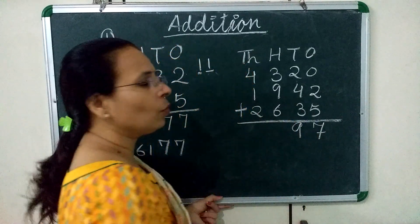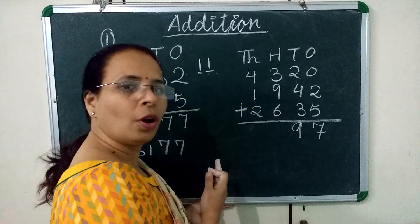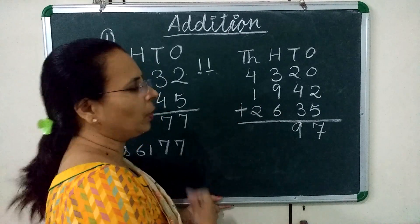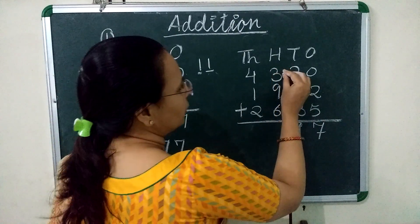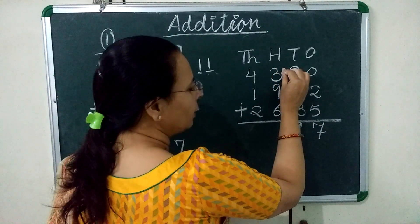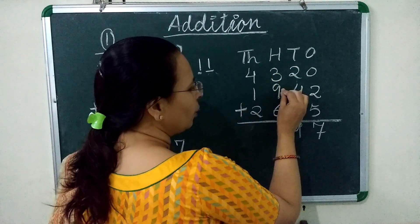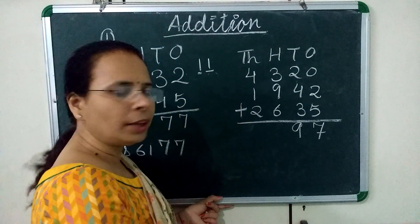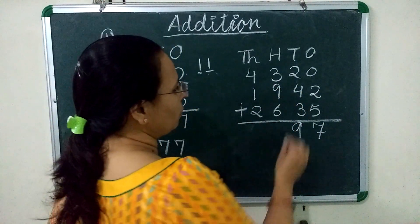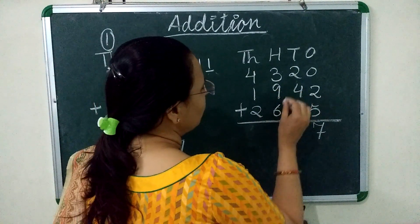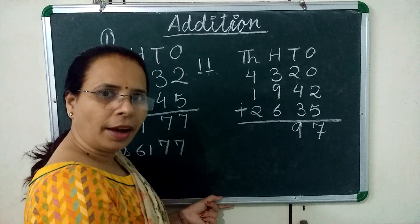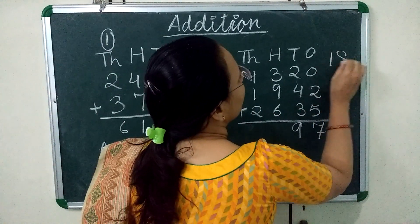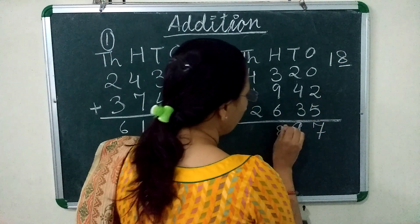Now we move to the 100's place. First we add 3 and 9: 3 plus 9 is 12. 12 plus 6 is 18. We write 8 at the 100's place and carry 1 over to the 1000's place.